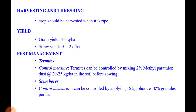Harvesting and threshing: the crop should be harvested at physiological maturity stage when it is ripe. It should be cut from the ground level with sickles and stacked in the field for about a week. The dried crop is then brought to the threshing yard and threshing is done by trampling under the feet of bullocks. Yield is 4 to 6 quintals per hectare grain yield and 10 to 12 quintals per hectare straw yield.